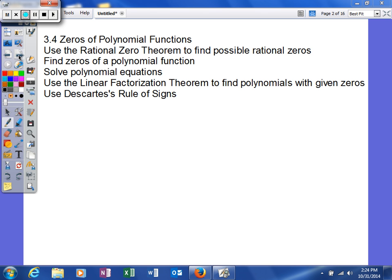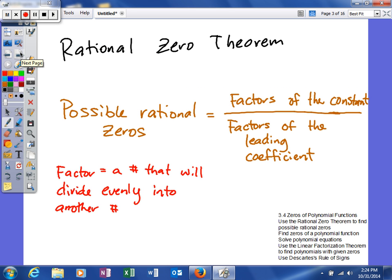Basically what this section is, it's going to allow us to find zeros that we're not going to be able to find by factoring. So, it's really going to open up some doors that were previously not open for us.